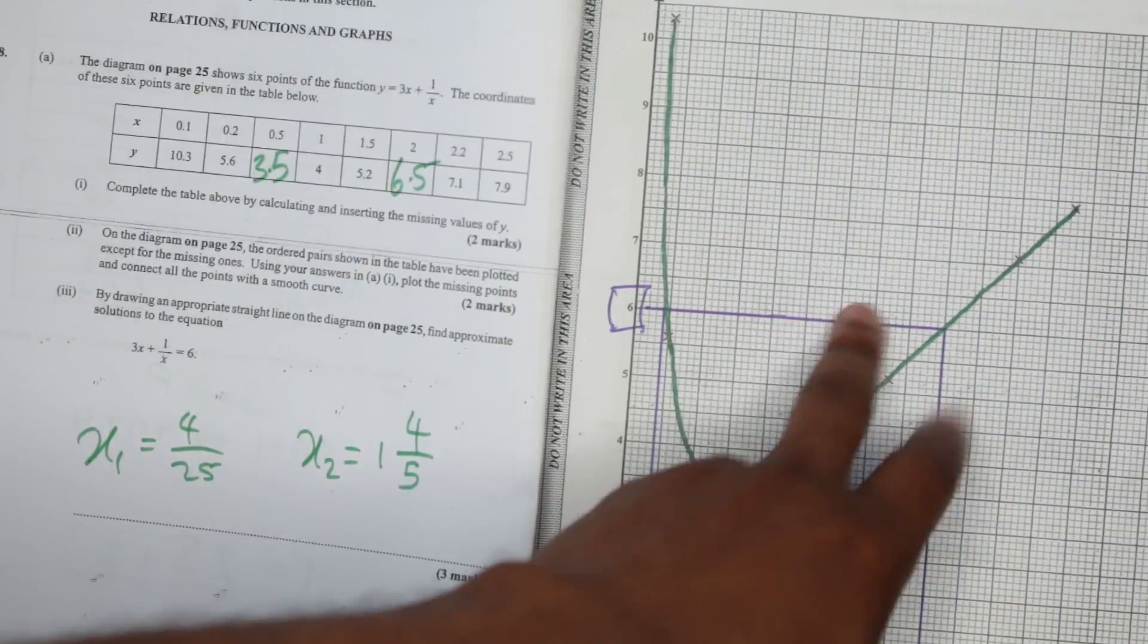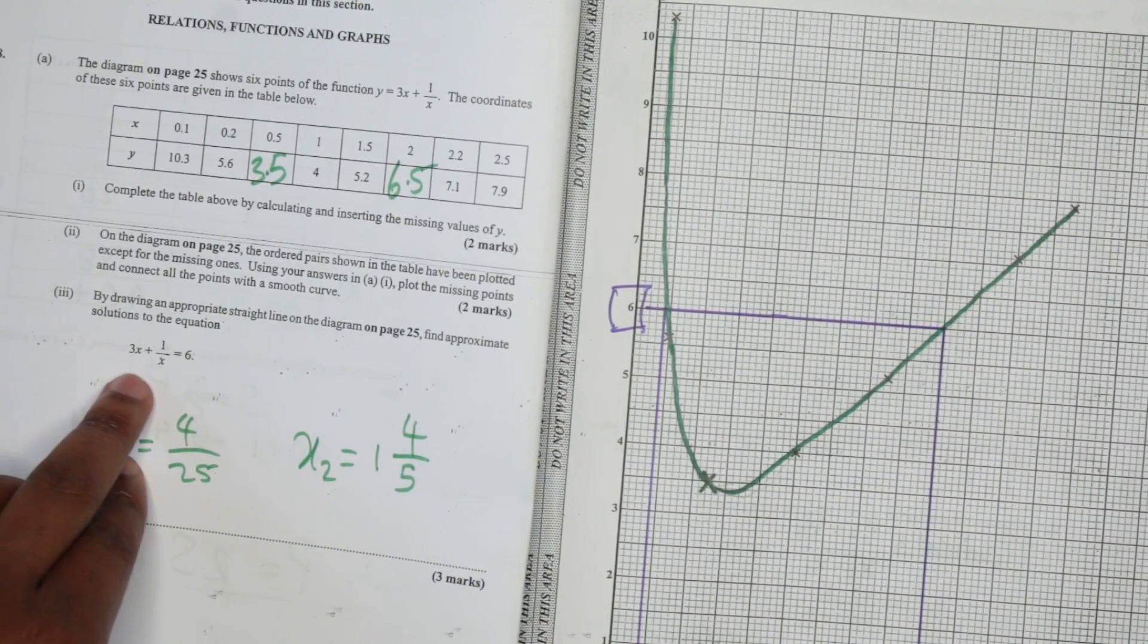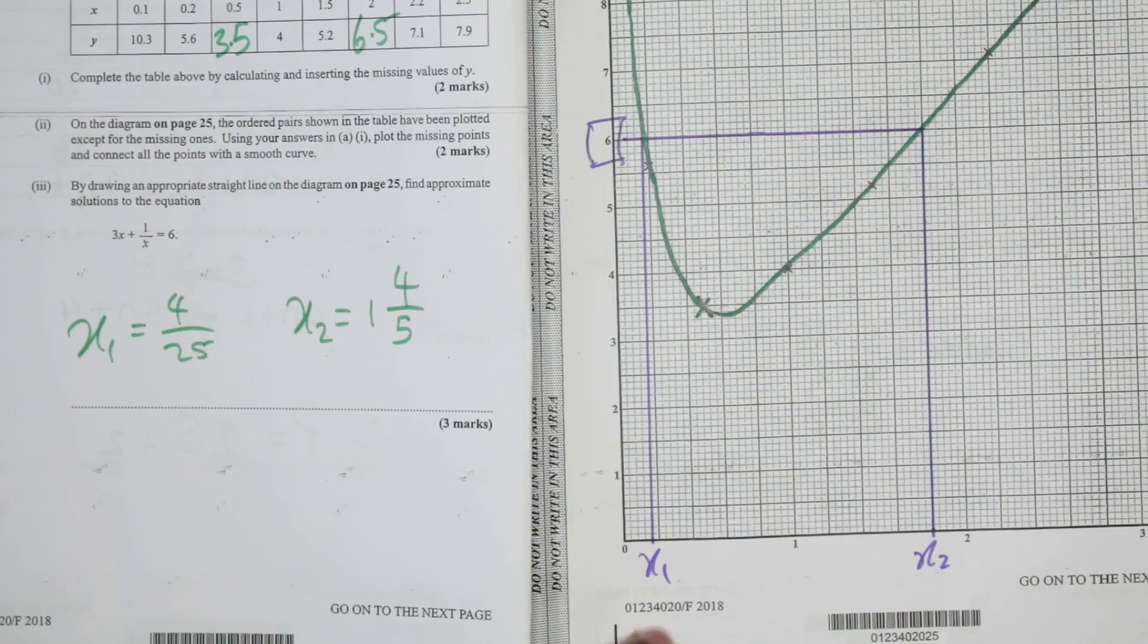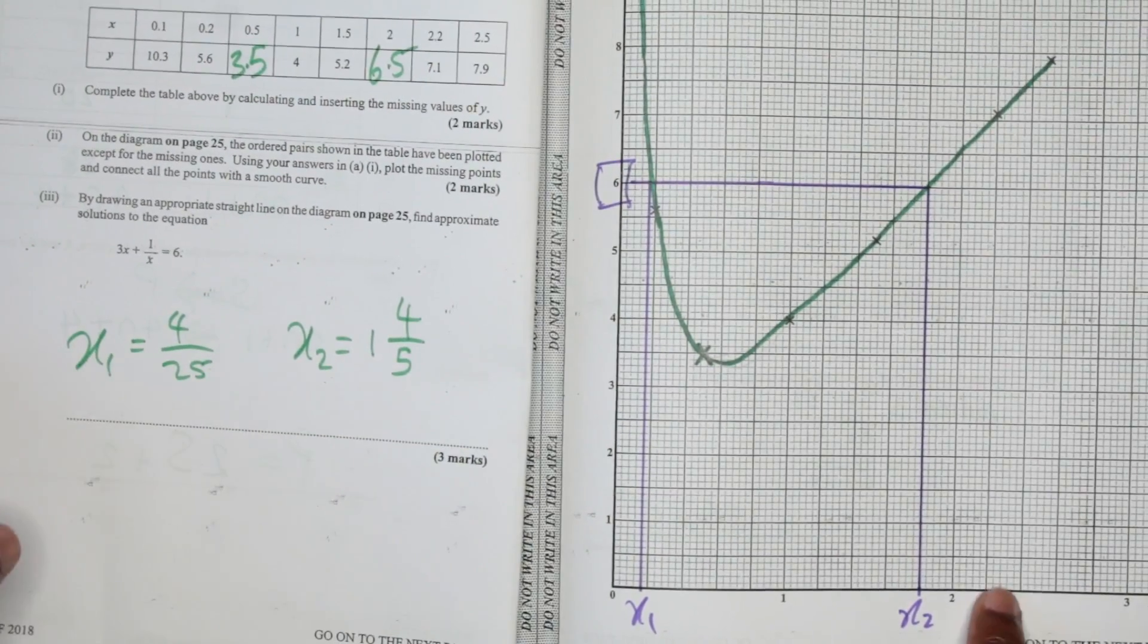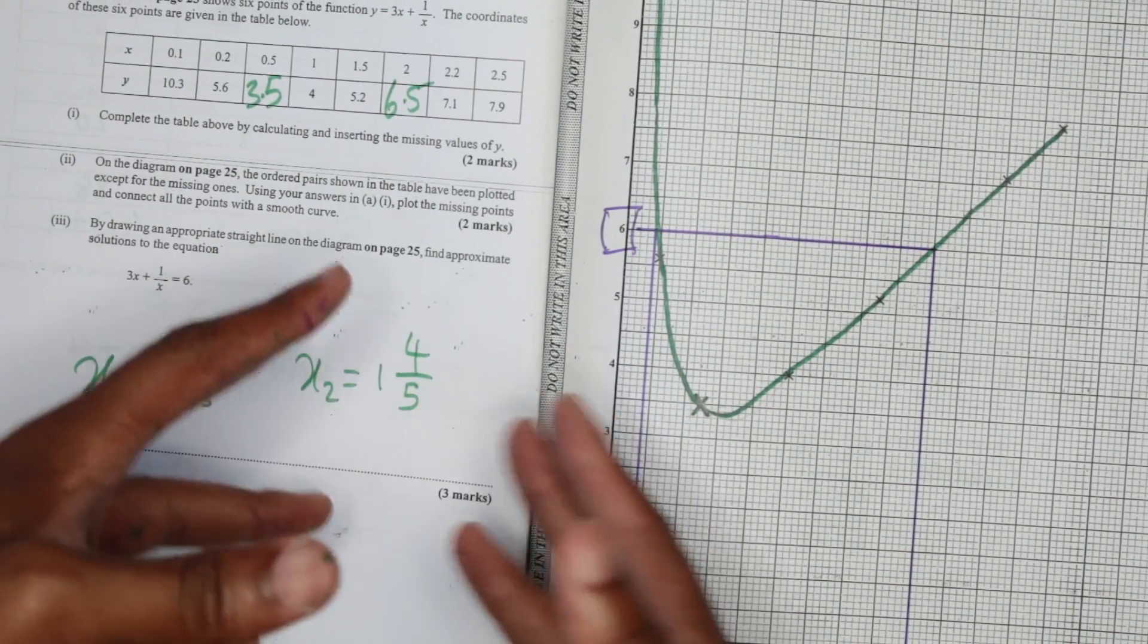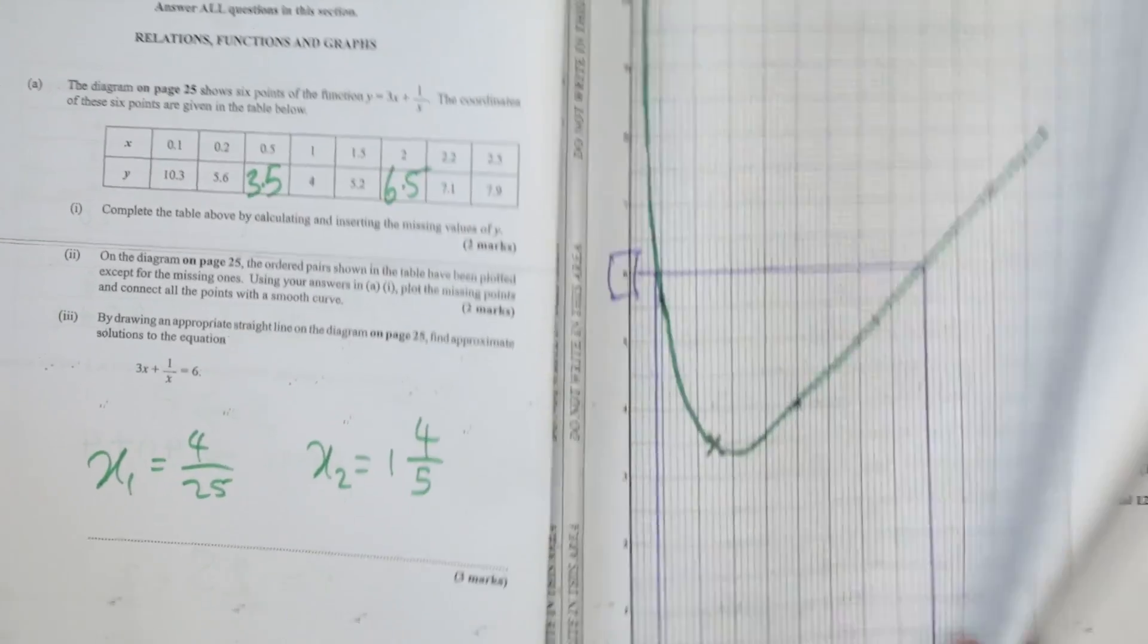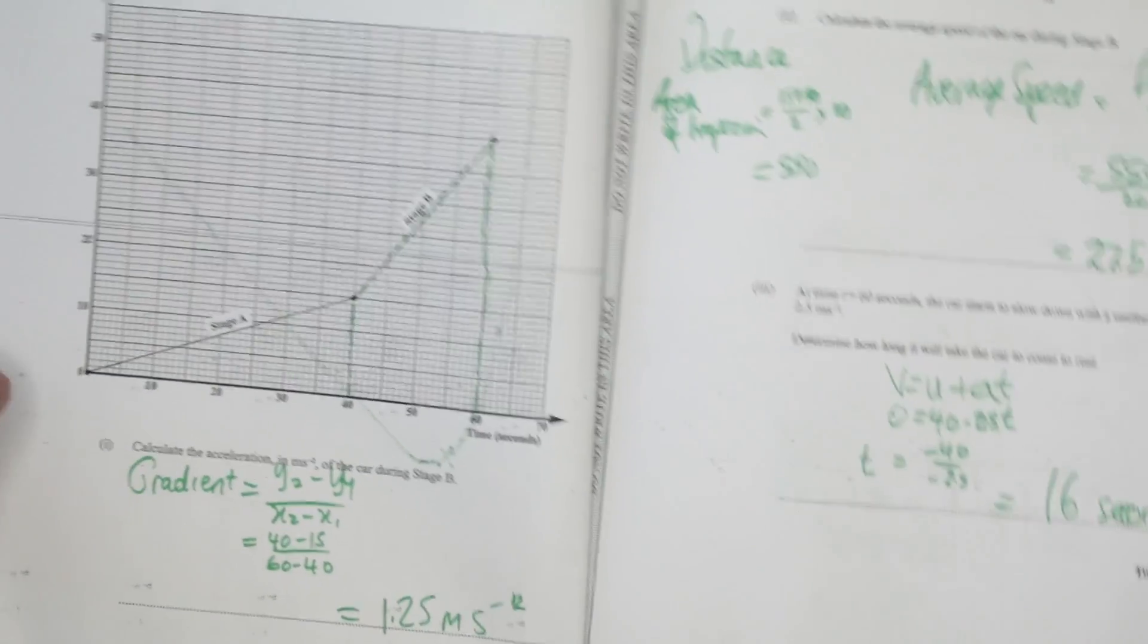Then you have to draw the line where y is equal to 6 because they give you to solve this equation here. And the x values that cut that line are x1, x2, and those are the answers. So quick marks in this question if you were comfortable with the weirdness of it. Very easy stuff, but very weird stuff.